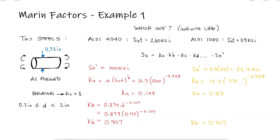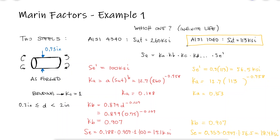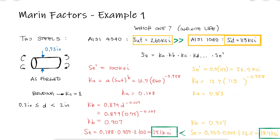The corrected endurance limit using the Marin factors for the 4340 steel is 17.1 KSI, while for the 1040 steel it is 18.4 KSI. Since the endurance limit is higher for the 1040, it makes sense to choose this material for infinite life applications. This example demonstrates that even though one material has a much higher ultimate strength, for parts subjected to cyclic loading we care about fatigue strength, not ultimate tensile strength.